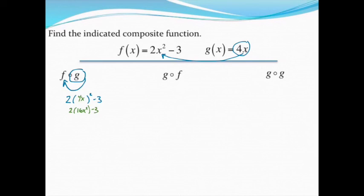From here, I can just multiply these numbers together. 2 times 16 gets me 32, so 32x squared minus 3 is as simplified as I can get, and there is my brand new composite function. Notice it's not a single number I got, it's a brand new function.